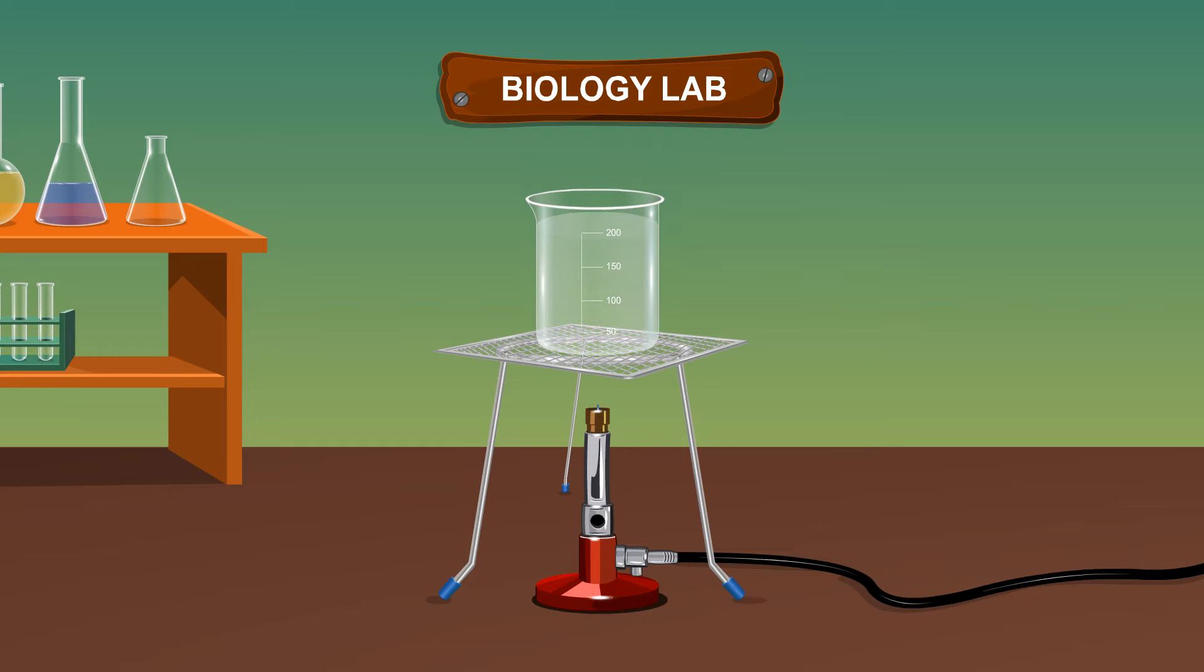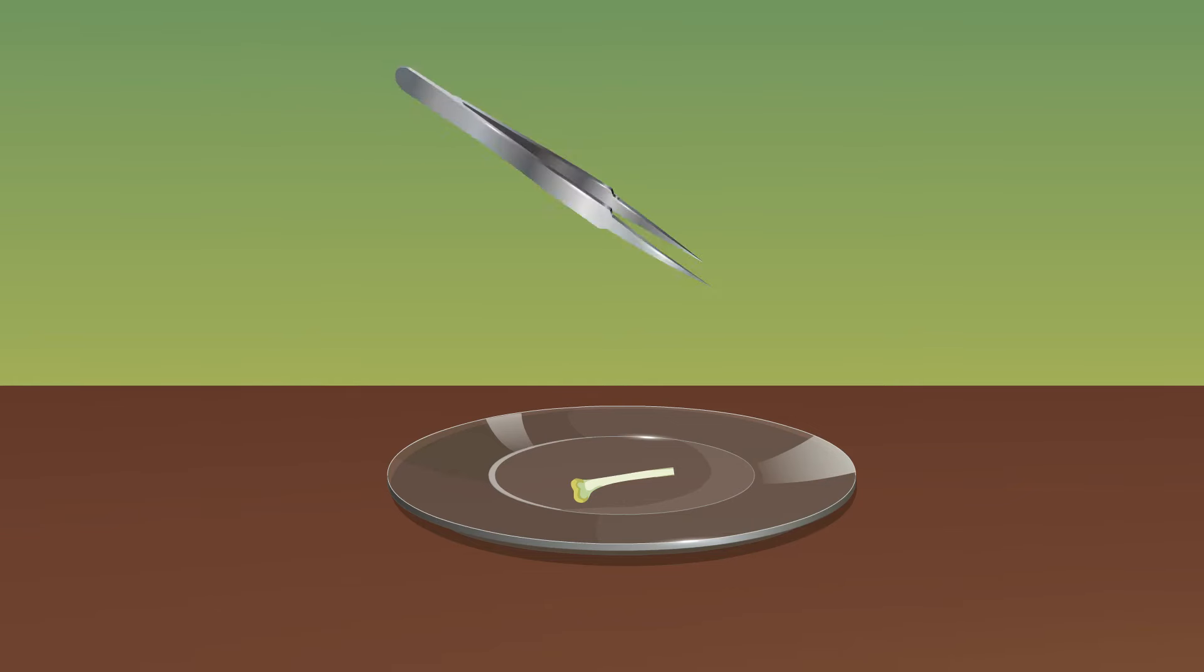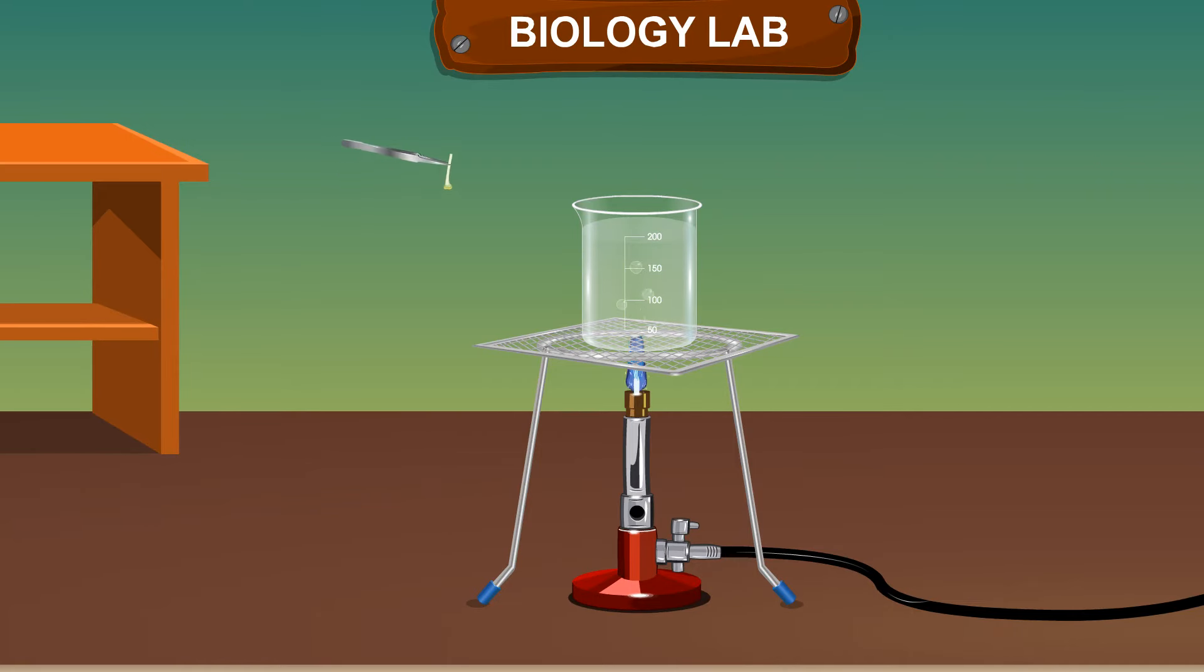Using forceps, transfer the stigma into the beaker containing boiling water. Boil it for 5 to 10 minutes to soften the tissues.